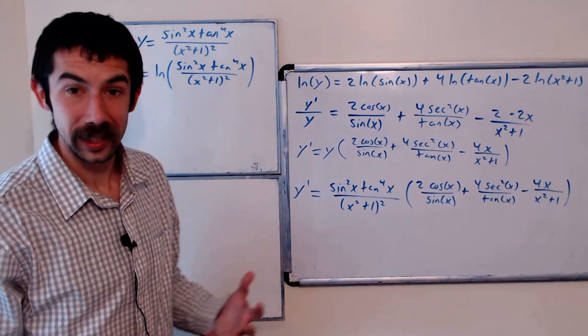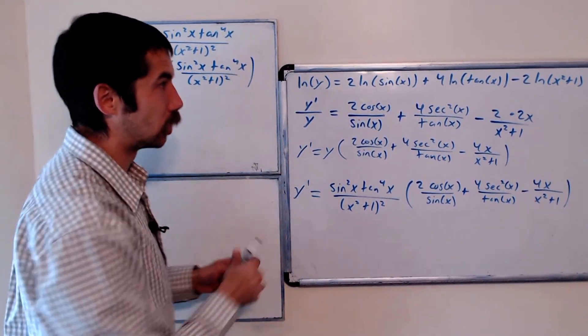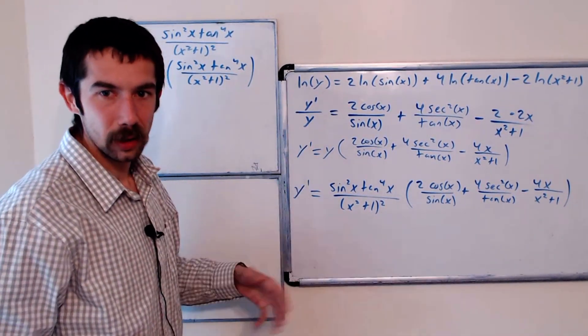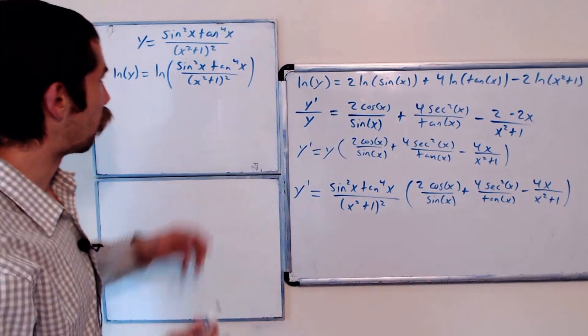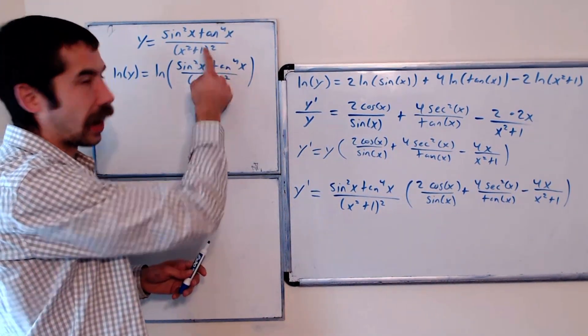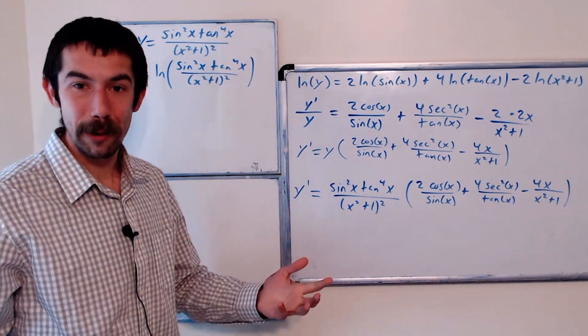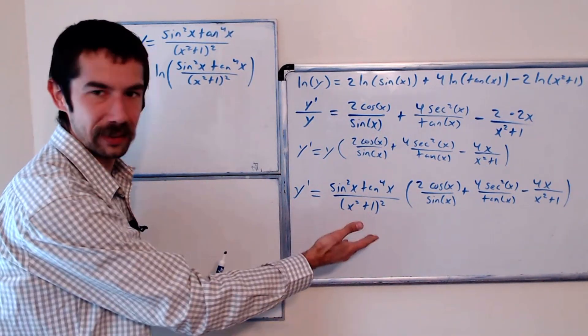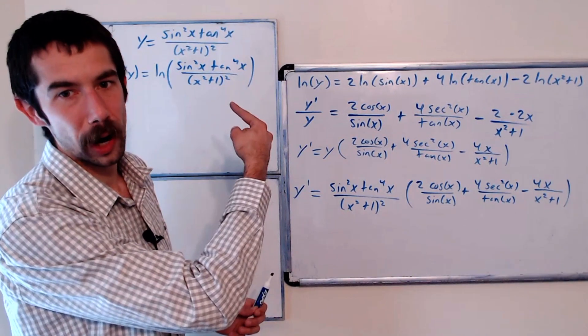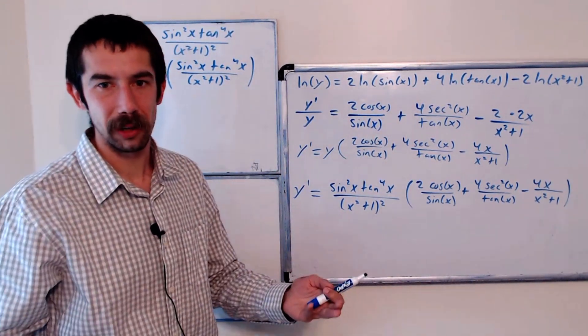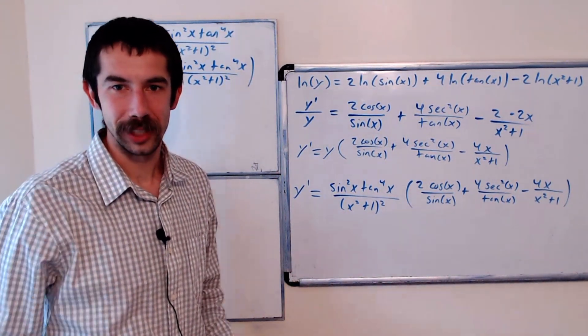And that's it. So I personally think it's a lot easier to take the derivative using this technique, logarithmic differentiation, than it would have been to do the product rule and the quotient rule and the chain rule all in one example. Let me know what you think. Are you a fan of logarithmic differentiation or old school product, quotient, and chain? Both will give you the right answer. See you later. Bye-bye.